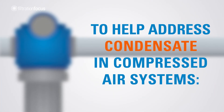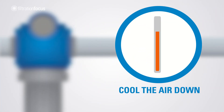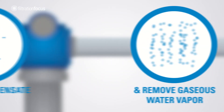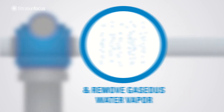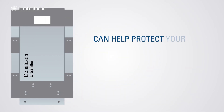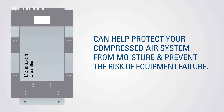To help address condensate in compressed air systems: cool the air down, remove condensate, and remove gaseous water vapour. A condensate management system, such as a three-stage absorption dryer, can help protect your compressed air system from moisture and prevent the risk of equipment failure.